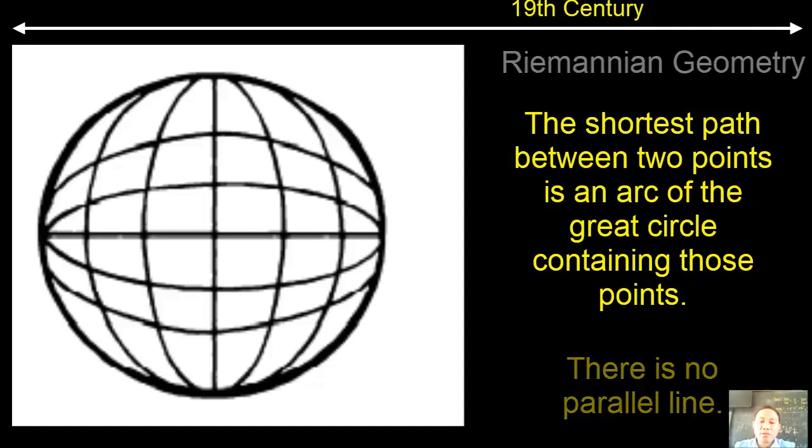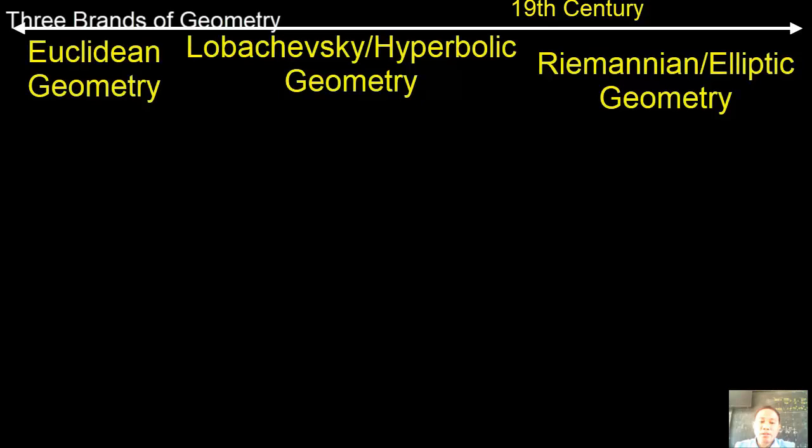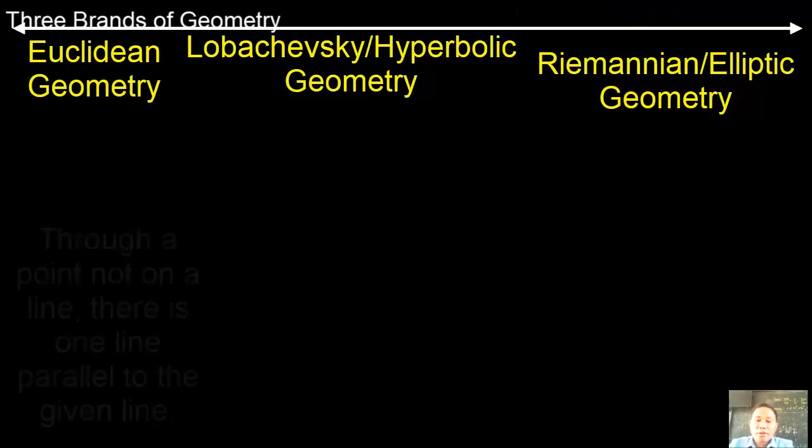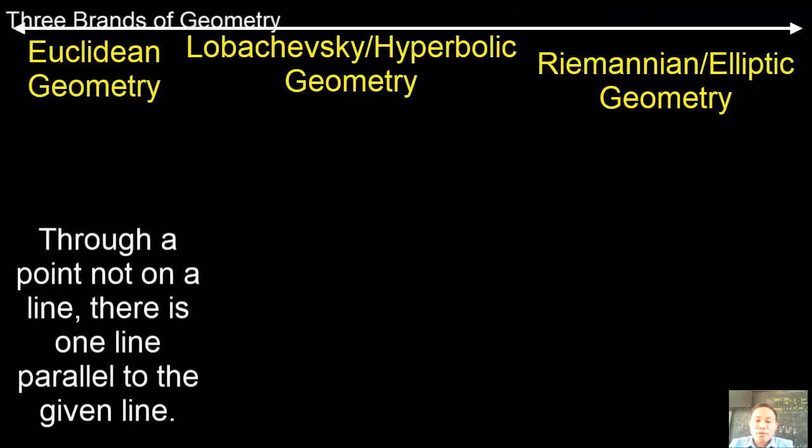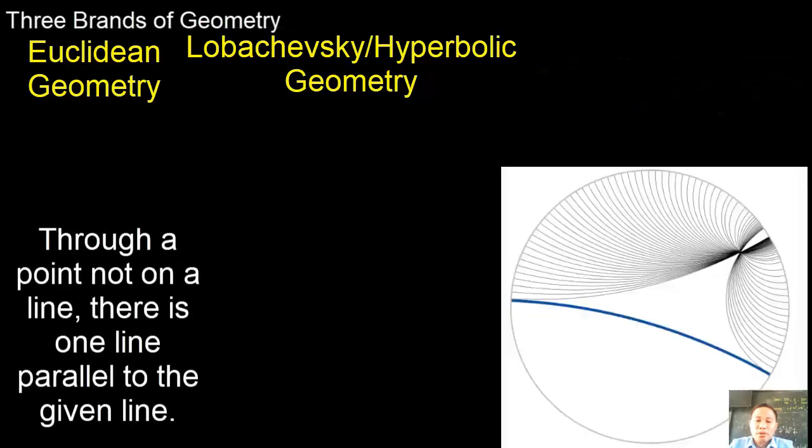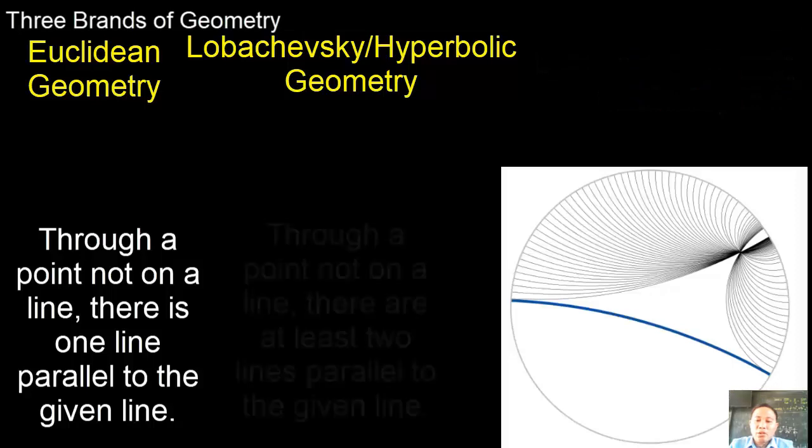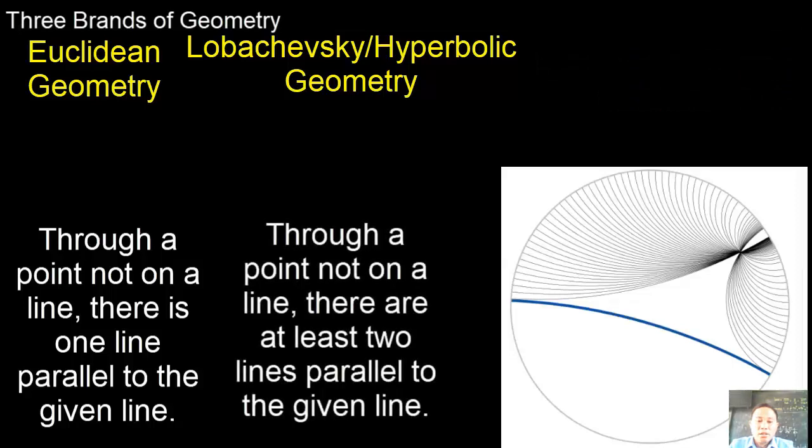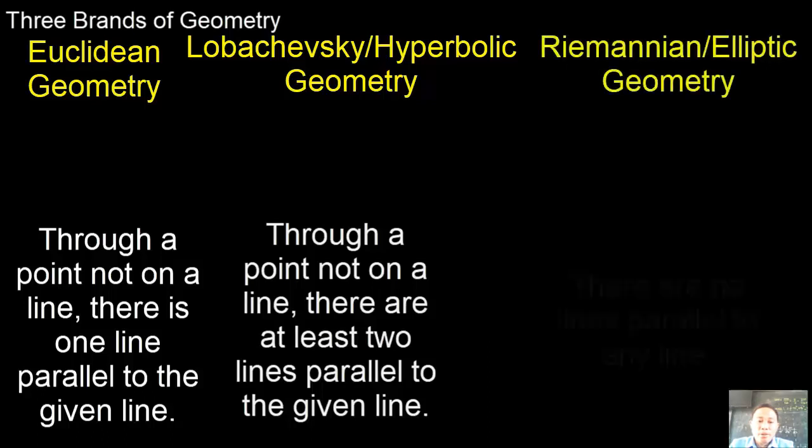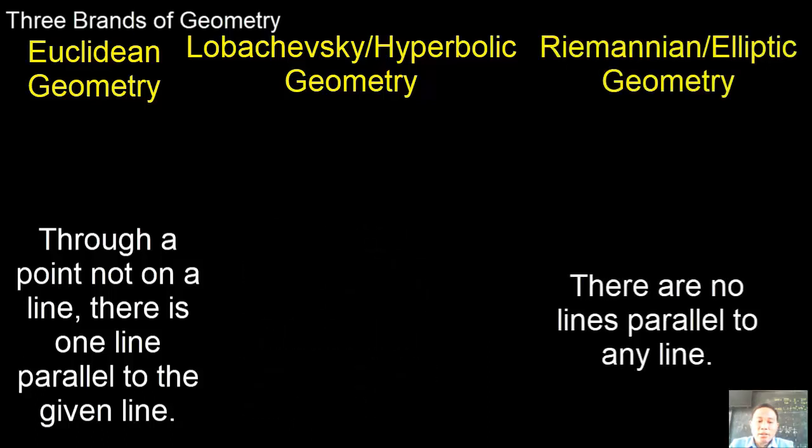In the middle of the 19th century, there were three brands of geometry: Euclidean geometry, Lobachevsky geometry or hyperbolic geometry, and Riemannian geometry or elliptic geometry. We're going to compare these three geometries. Euclidean geometry states that through a point not on a given line, there exists a line parallel to the given line. In Lobachevsky geometry, through a point not on a given line, there are at least two lines parallel to the given line. In Riemannian geometry, there are no lines parallel to the given line because they intersect.